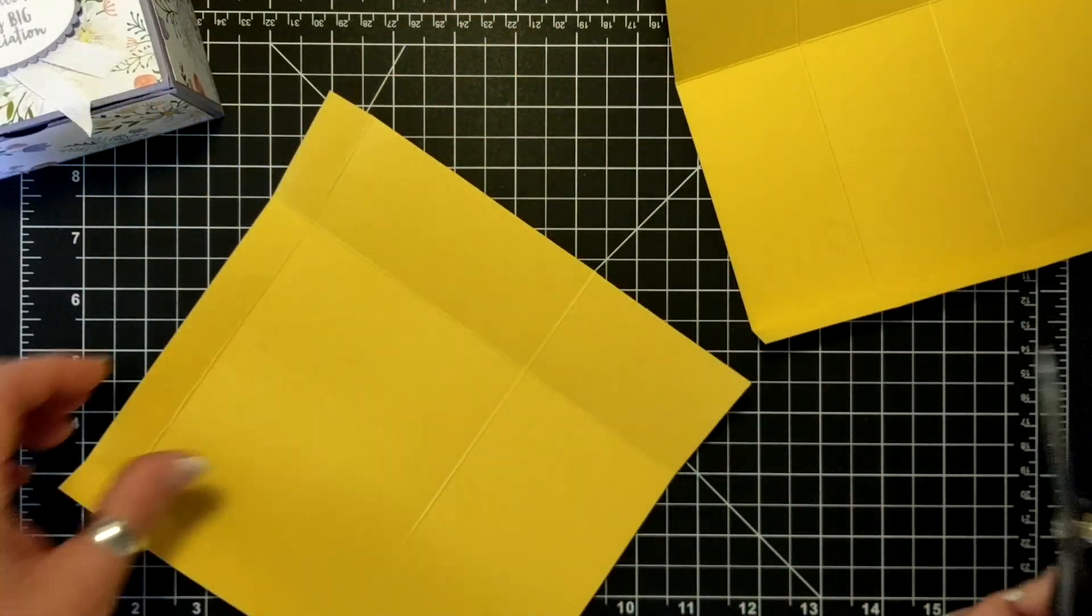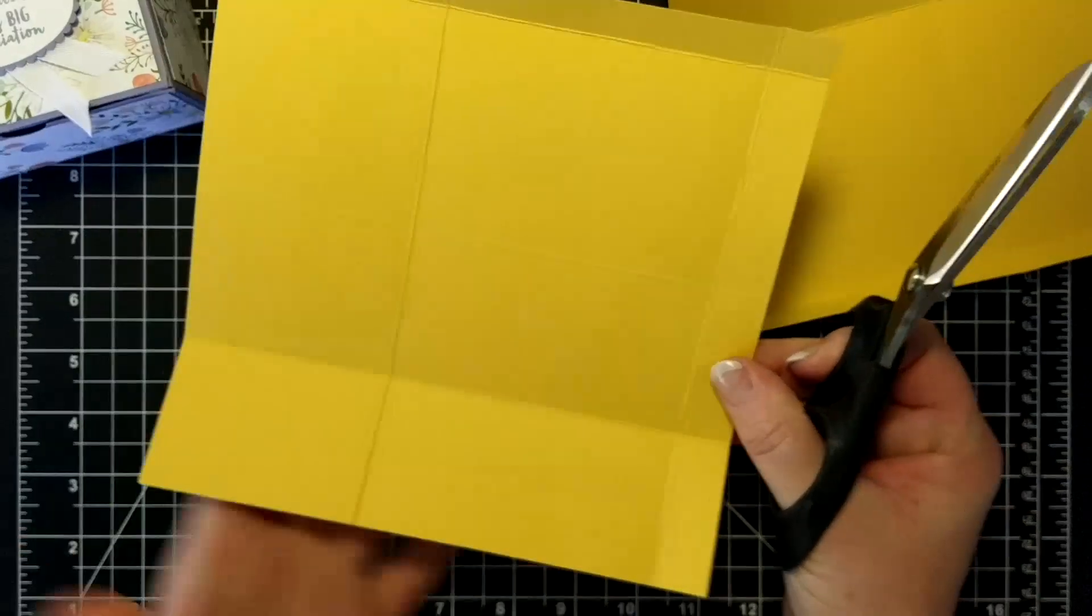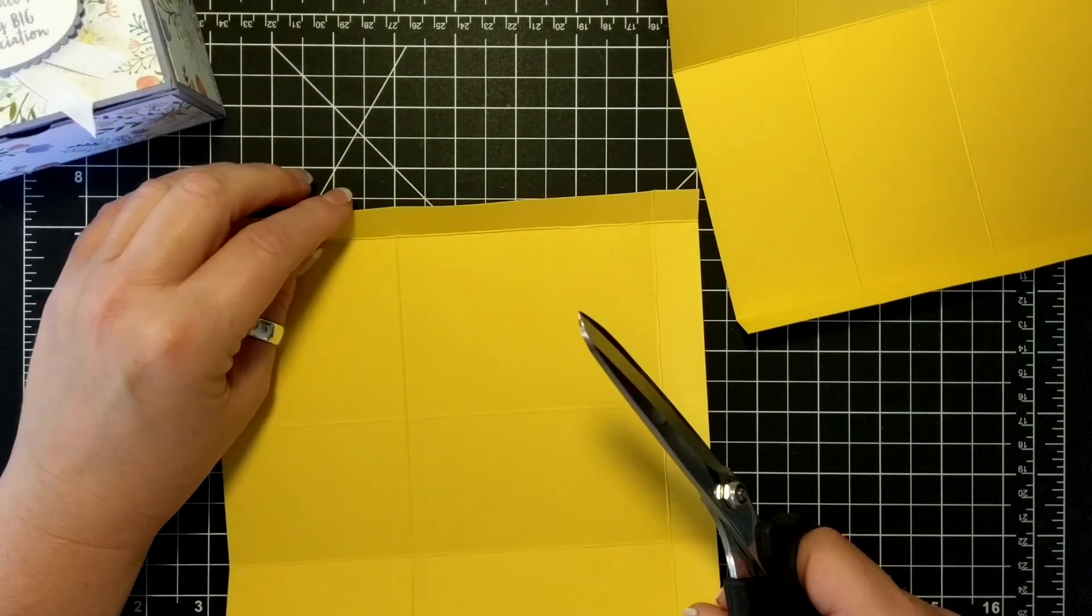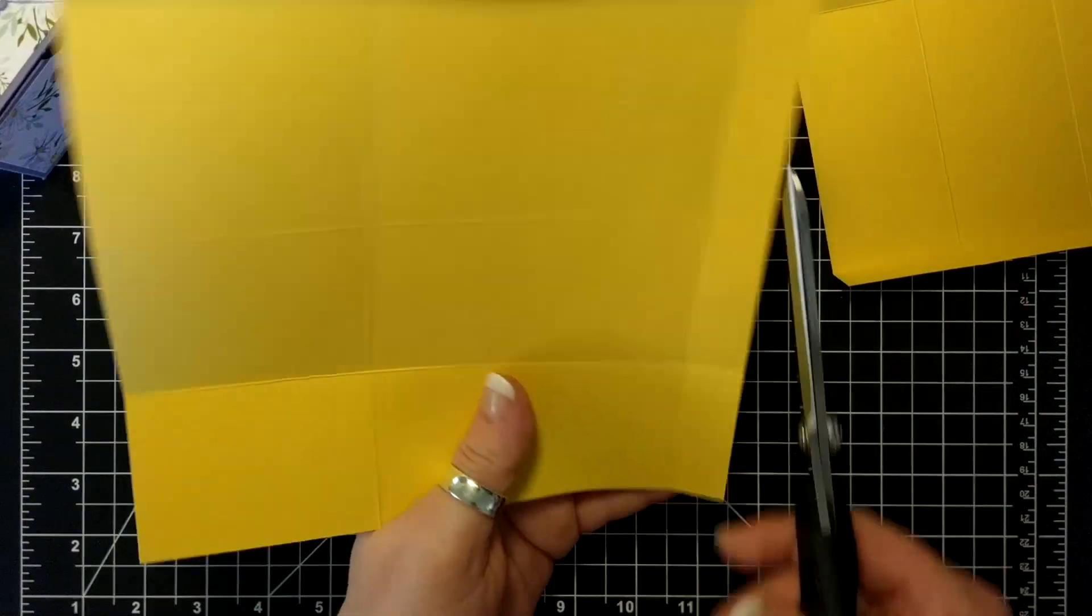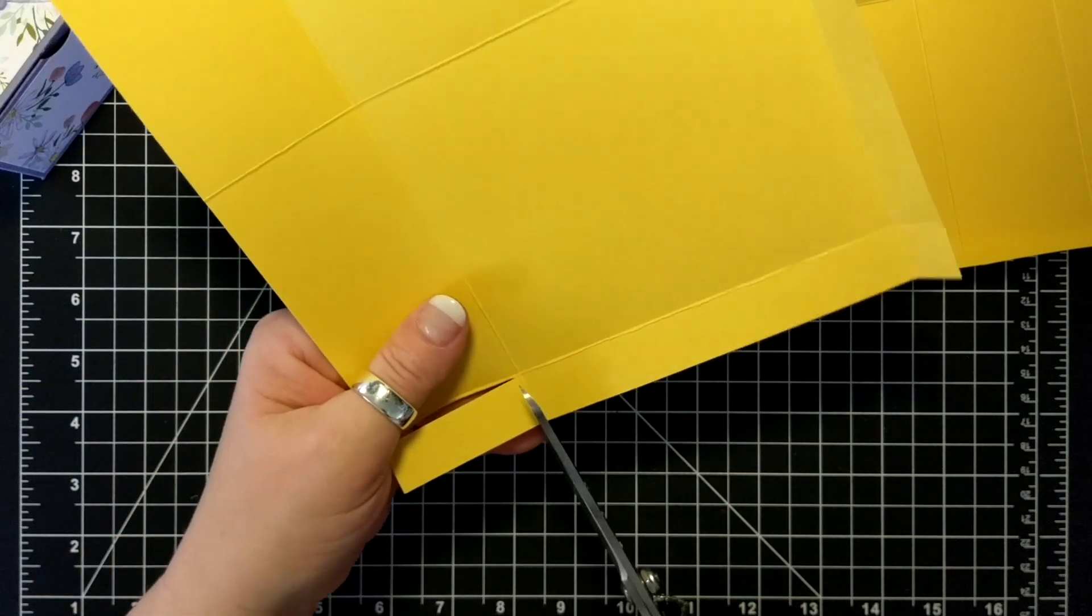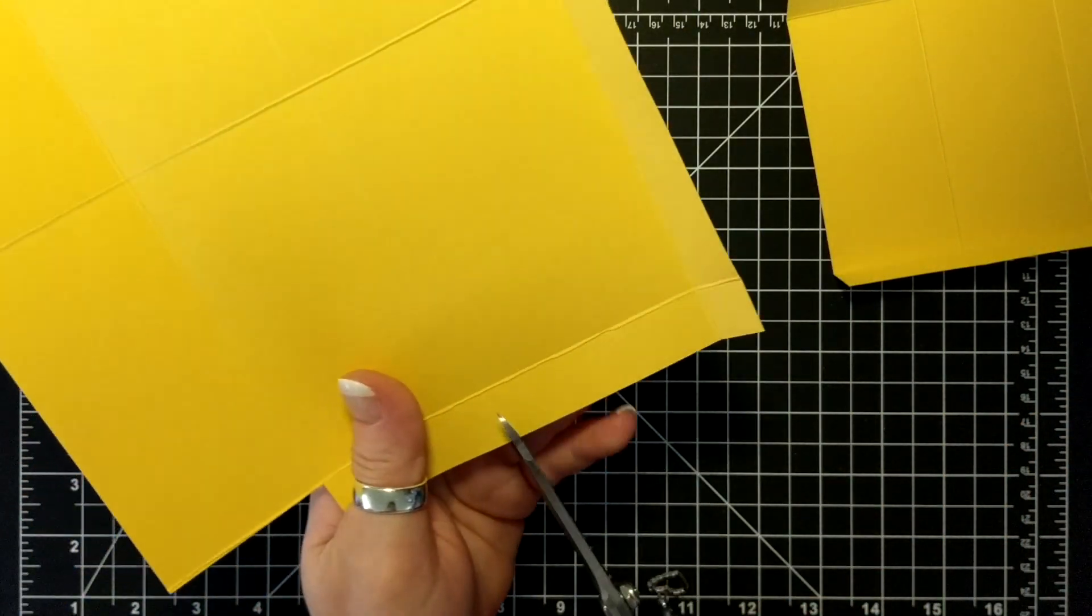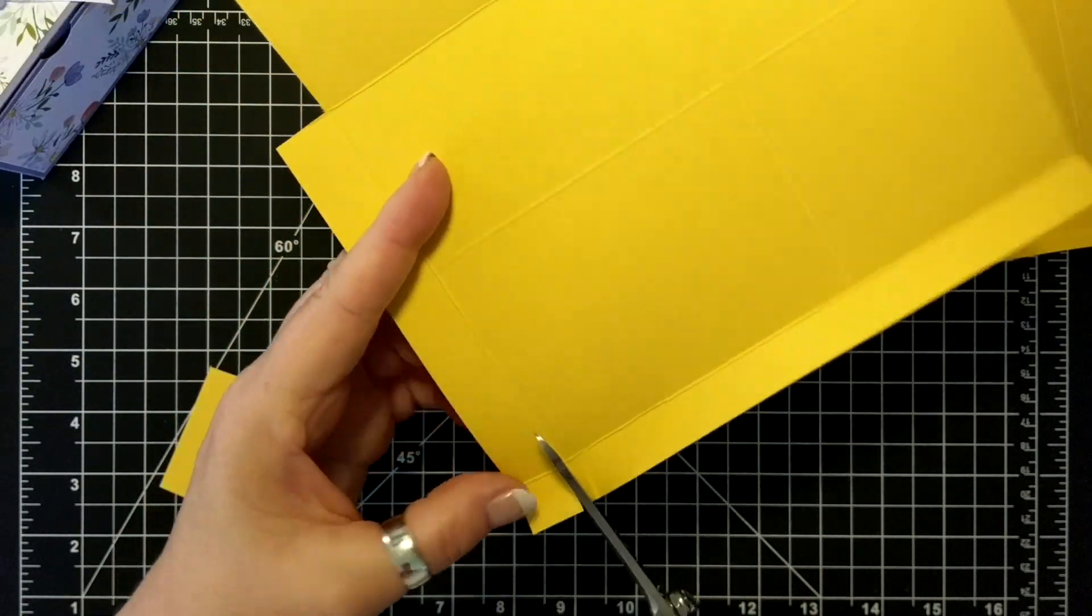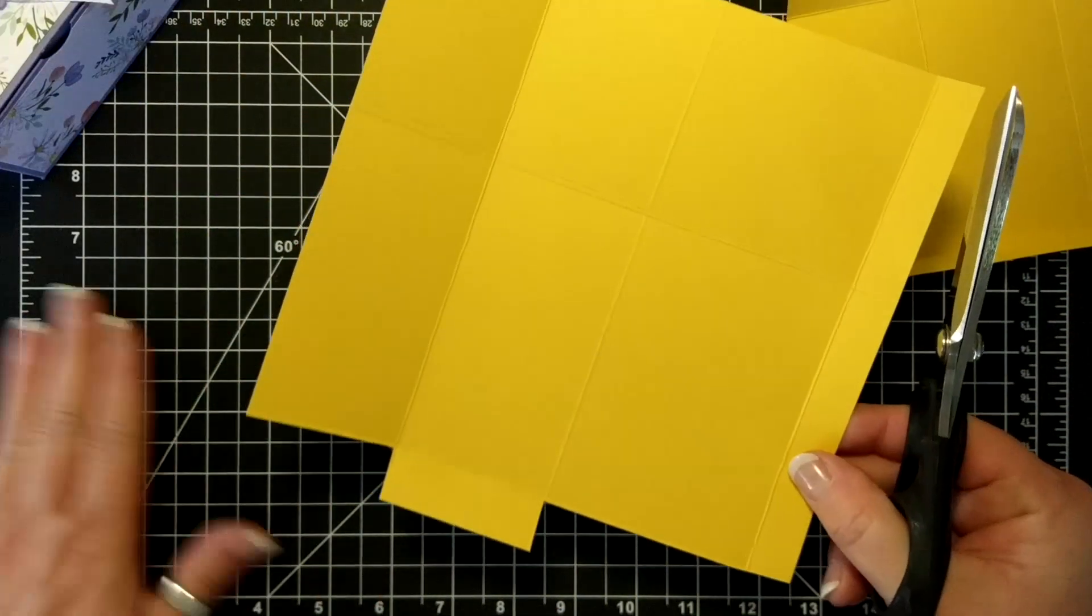And then with my scissors, I'm going to take, so there's a little lip here and then there's two score lines down. We're going to take off this rectangle and this little square and rectangle.